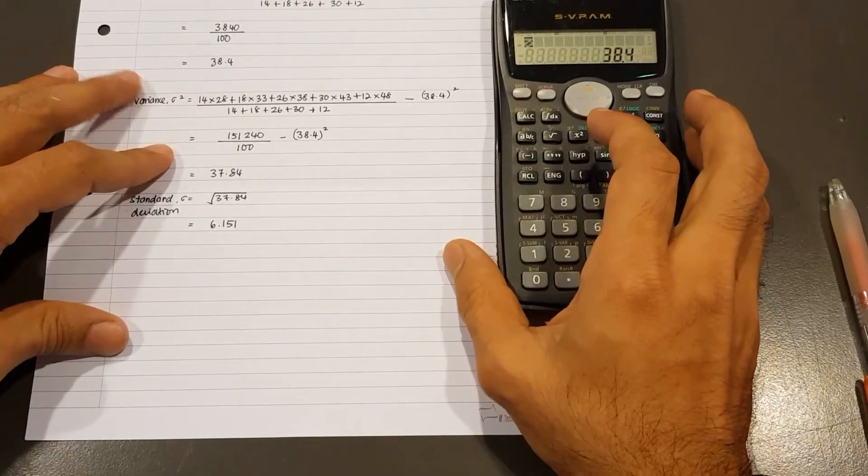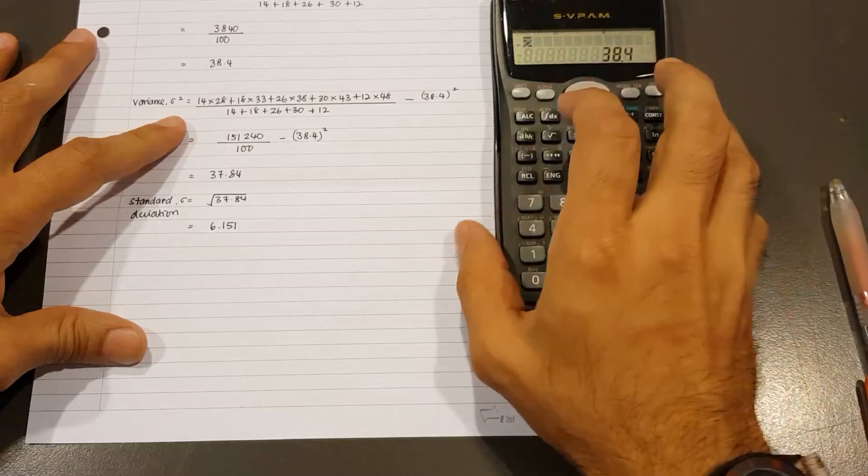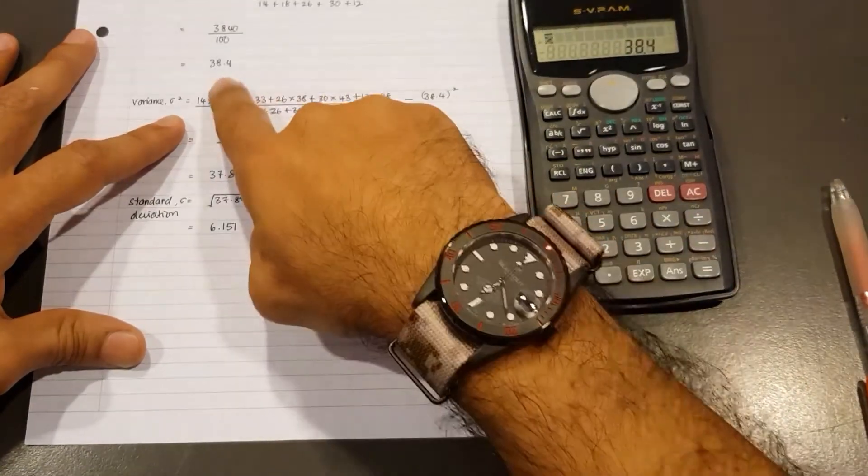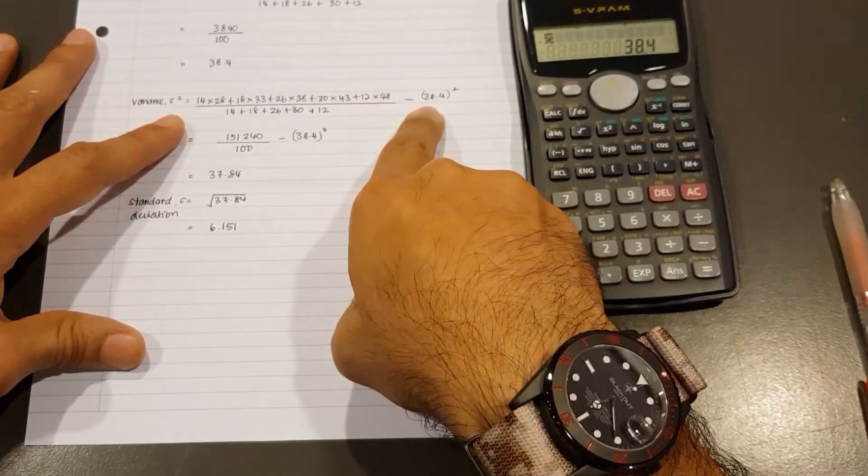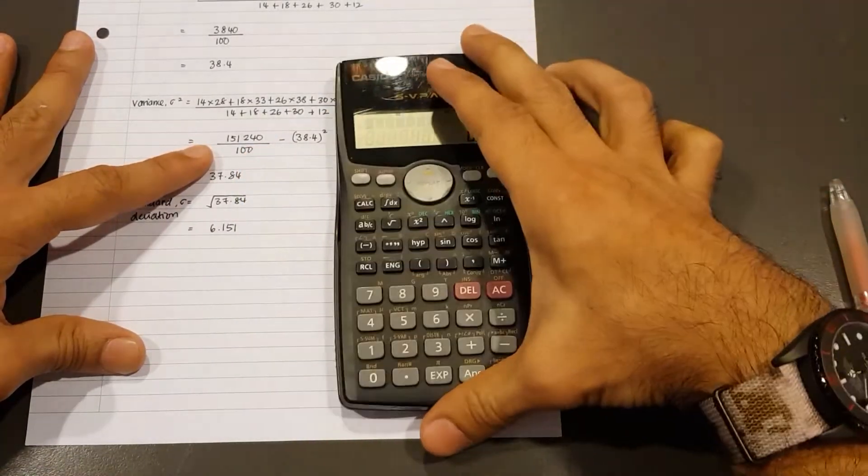Now, I can also do the same thing to find the variance or even standard deviation. I've prepared the working here. Obviously, the mean 38.4, we get it from here. So you put that in there. And to find these values here. So now back to the calculator.